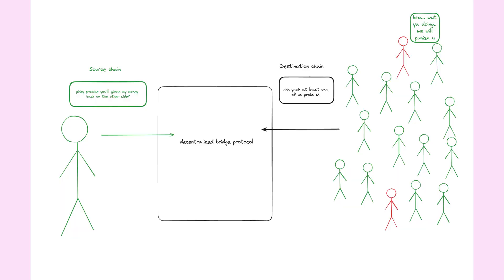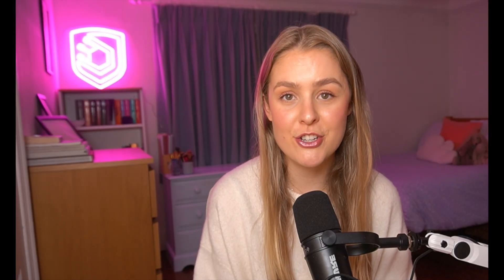And this isn't really the best approach. Instead, we want to use decentralised bridges — trust-minimised bridges that instead of relying on one single entity to keep their promise, rely on the trustworthiness of a network of people. Chainlink CCIP offers this decentralised solution. Instead of moving your funds through a single point of failure, you move them through a collection of decentralised Chainlink nodes, where if one node acts maliciously, the others will punish them, making the system trust-minimised.